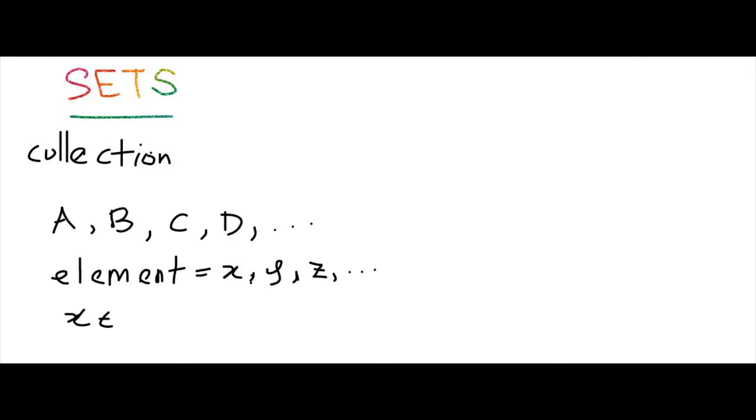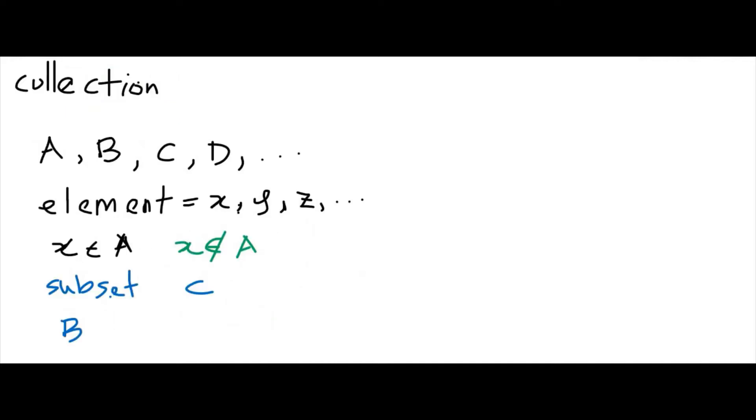If x is not an element of A, all you need to do is put a slash across the element symbol. Now what about subset? The subset symbol looks something like that, an elongated C. So if I say that B is a subset of A, then whatever that is in B will actually be in A.